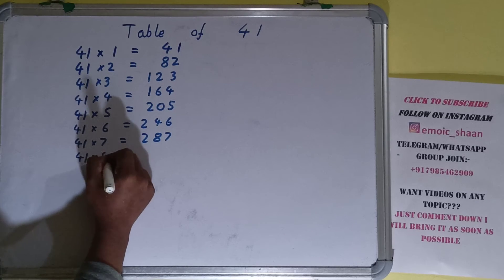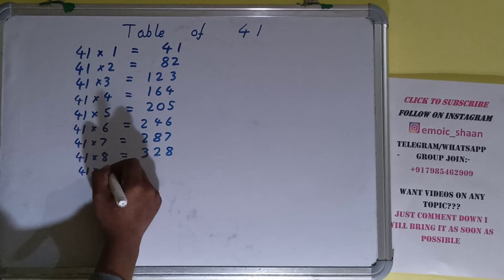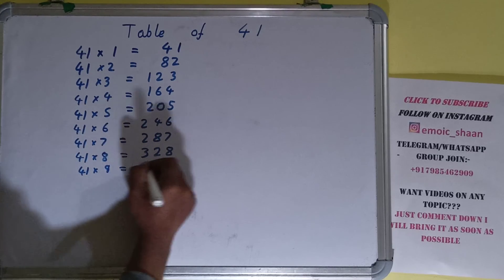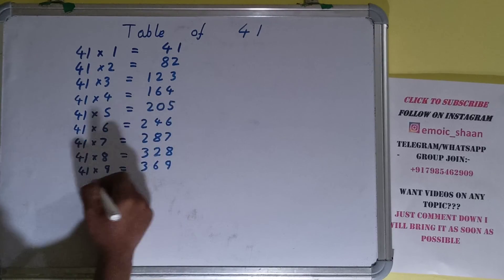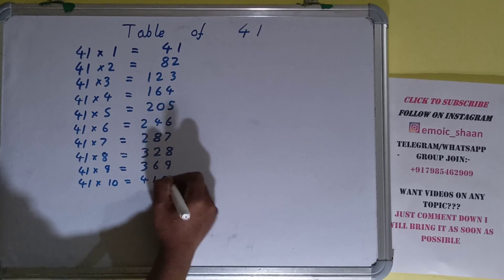41 into 8 is 328, 41 into 9 is 369, and 41 into 10 is 410.